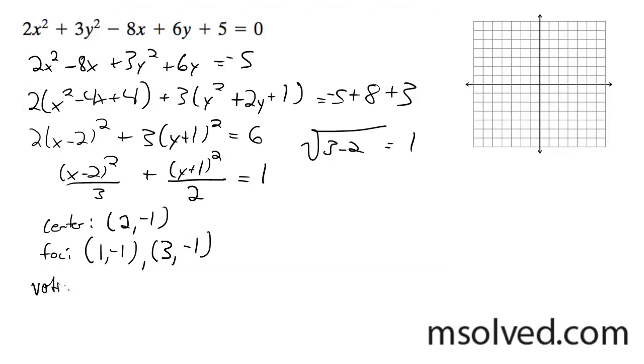And for our vertices, we get c equals root 3. So it's going to be (2 - √3, -1) and (2 + √3, -1).